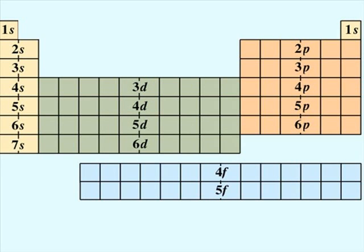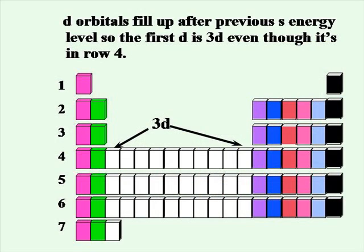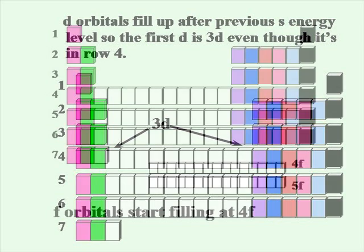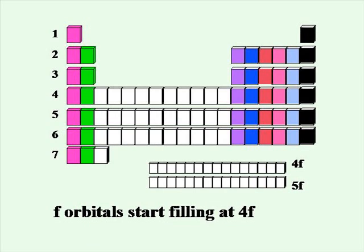We can use the SPDF blocks on the periodic table to help us see where the electrons are filling and in what order they will fill. The D orbitals fill up after previous S energy levels, so the first D is the 3D even though it is in the fourth row. F orbitals will start filling at 4F in the fourth energy level.